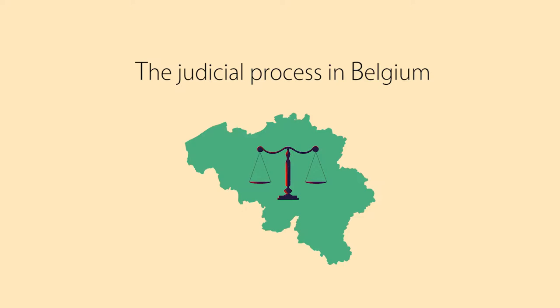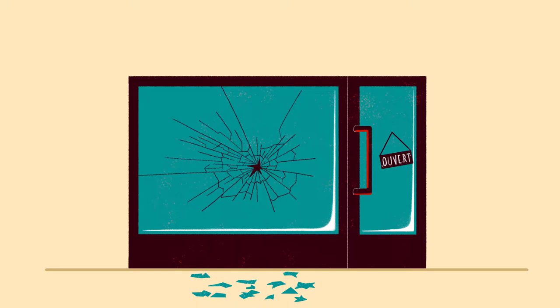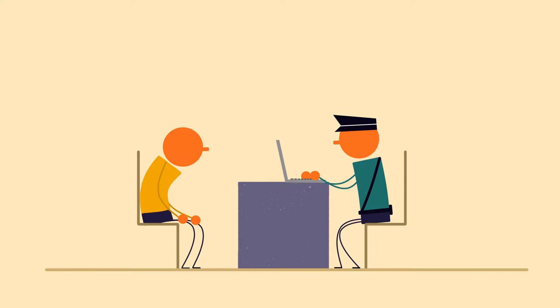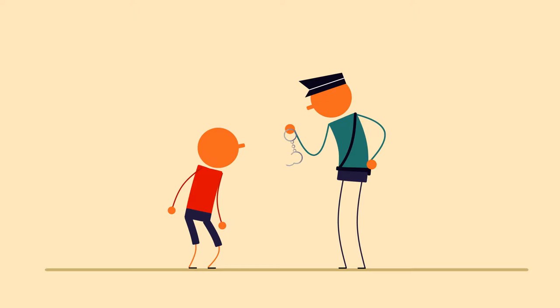Let's look at the judicial process in Belgium. When an offense is committed, the victim or a family member or friend files a complaint with the police.